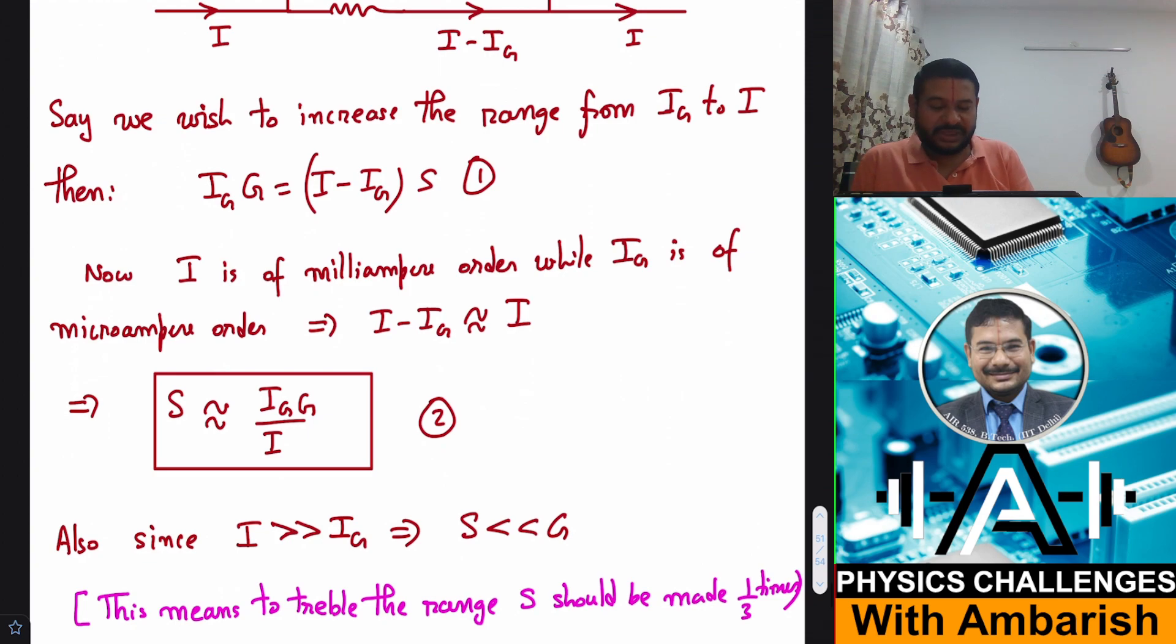Approximately, if you see, I is the order of milliampere whereas IG is of the order of microamperes. So I minus IG is approximately I itself. If you ignore the small subtraction term here, the approximate shunt value is simply IG into G upon I, where I is the milliampere range and IG is the microamperes.